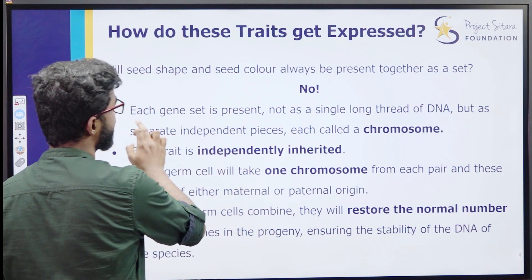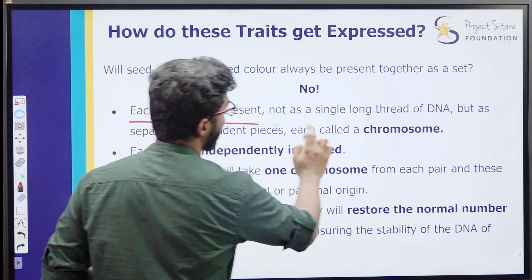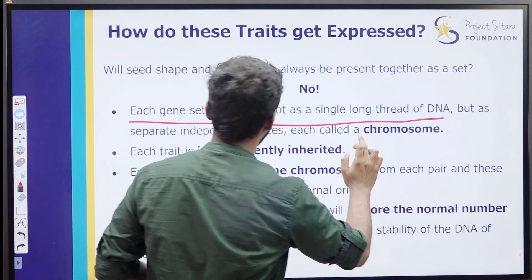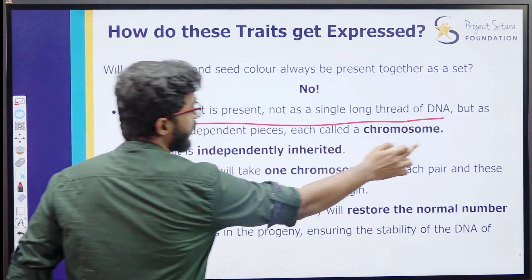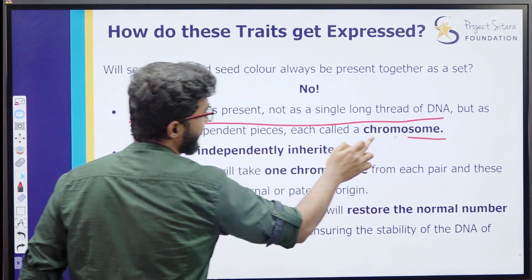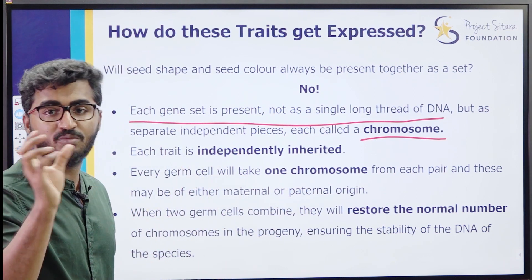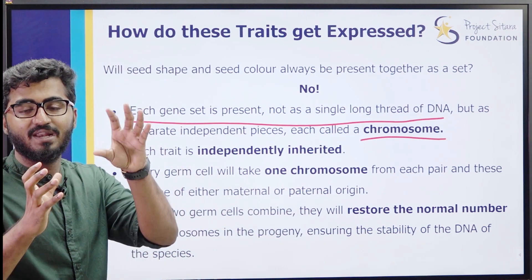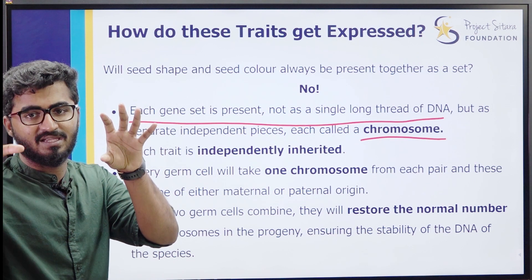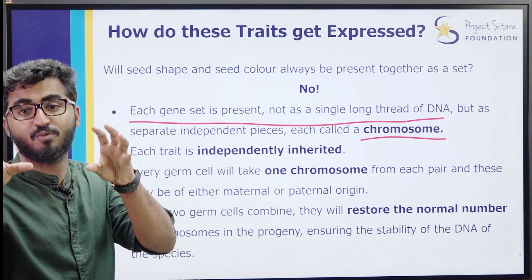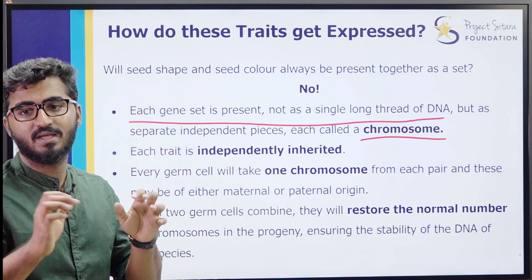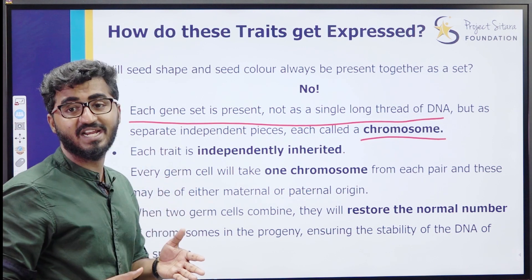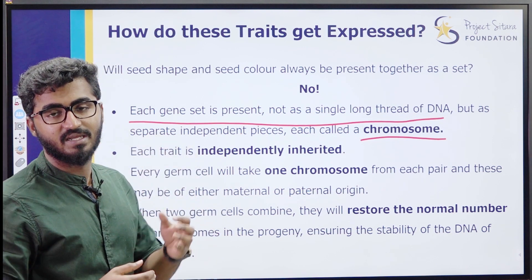Each gene set is present not as a single long thread of DNA, but as an independent piece called a chromosome. So each trait is on a chromosome that exists independently. Color and shape are not together - they are independent.